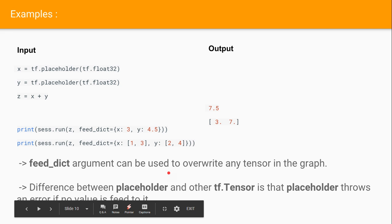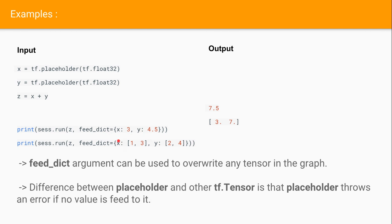The feed_dict argument can be used to overwrite any tensor in the graph. If you're using feed_dict, you can overwrite anything in the graph. We have given x equals [3, 4, 5] in the feed dictionary. The difference between a placeholder and other tensors is that placeholder will throw an error if no value is fed to it. If we do not feed any value to placeholder, it will throw an error.